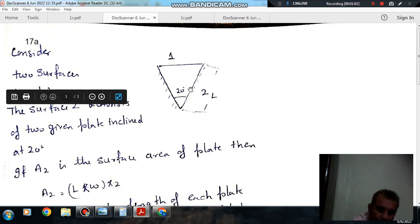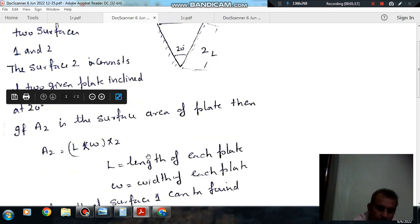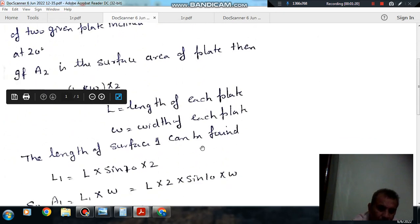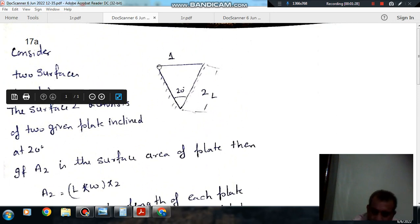The area of surface 2: because length is L of each plate and W is width of each plate, so the surface area is L times W. L is length of each plate and W is width of each plate.